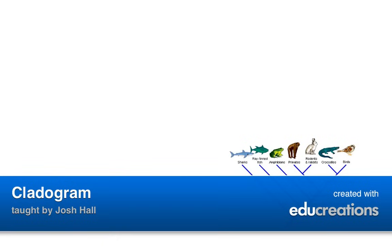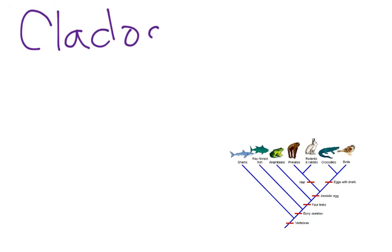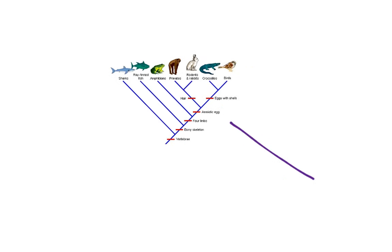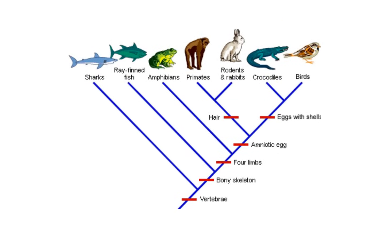Today we're going to be looking at what we call a cladogram. A cladogram is really just an image or a diagram that shows us an evolutionary relationship between different organisms. What I have here is a cladogram, and this cladogram shows some different creatures.